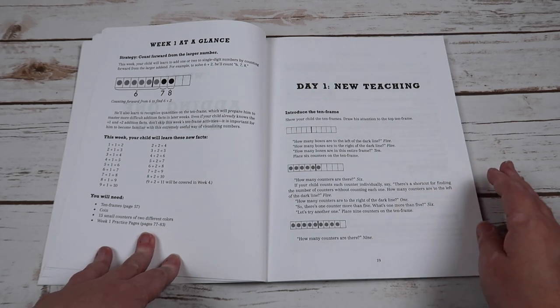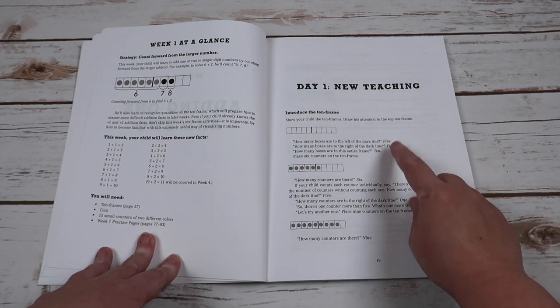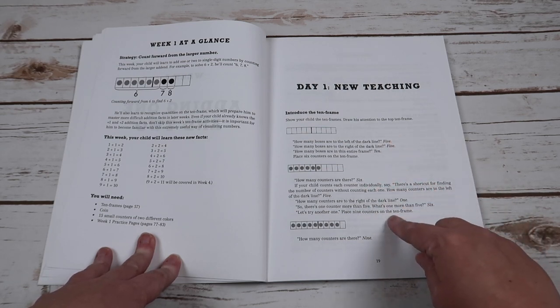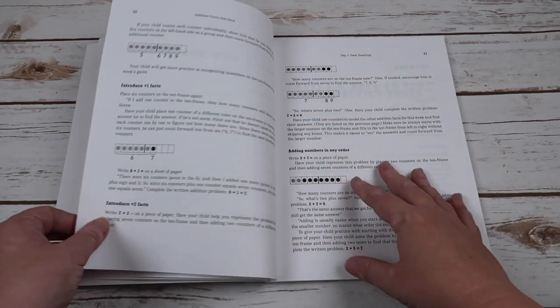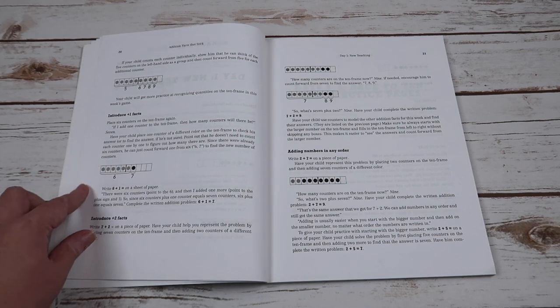And it is going to tell you step by step, show this to your child, ask these questions, here's the answers they should have. Ask these questions, it is verbatim, the conversation you should be having. Introduce the plus one facts, introduce the plus two facts, adding numbers in any order.